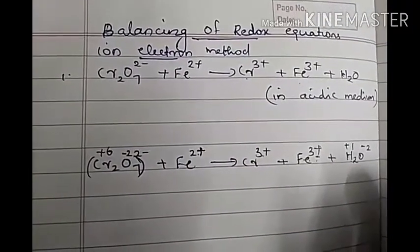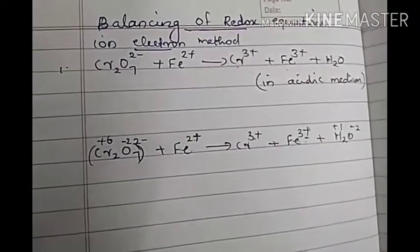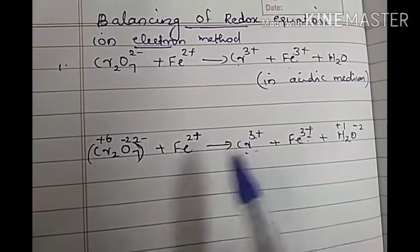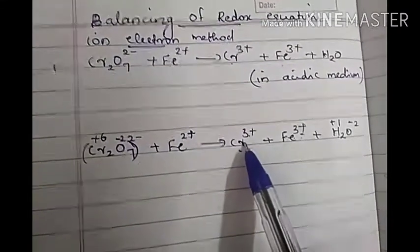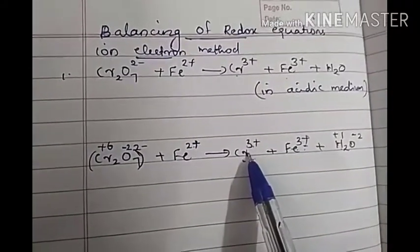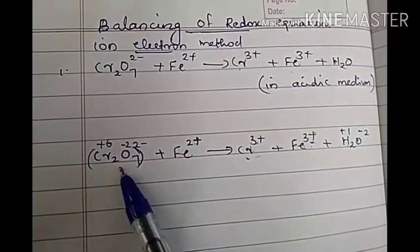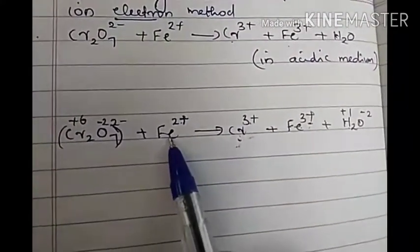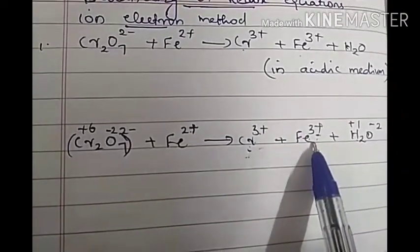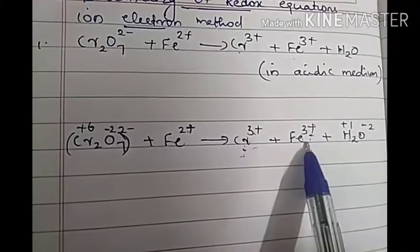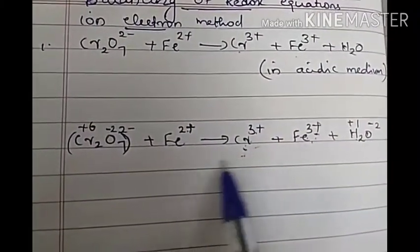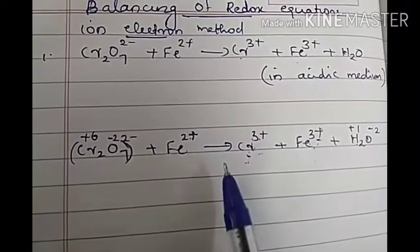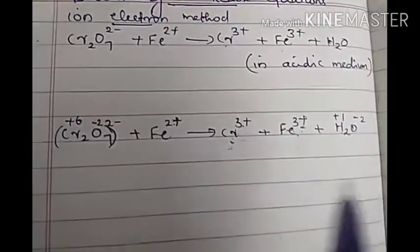Now we have to identify which species is undergoing oxidation and which is undergoing reduction. Chromium's oxidation number was plus six and it changes to plus three — the oxidation number decreases, so this species is undergoing reduction (Cr₂O₇²⁻ → Cr³⁺ is the reduction). Fe²⁺'s oxidation number was plus two and it changes to plus three — there is an increase in oxidation number, so Fe²⁺ is undergoing oxidation (Fe²⁺ → Fe³⁺ is the oxidation). In Step 2, we divide this equation into two halves: reduction half-reaction and oxidation half-reaction.